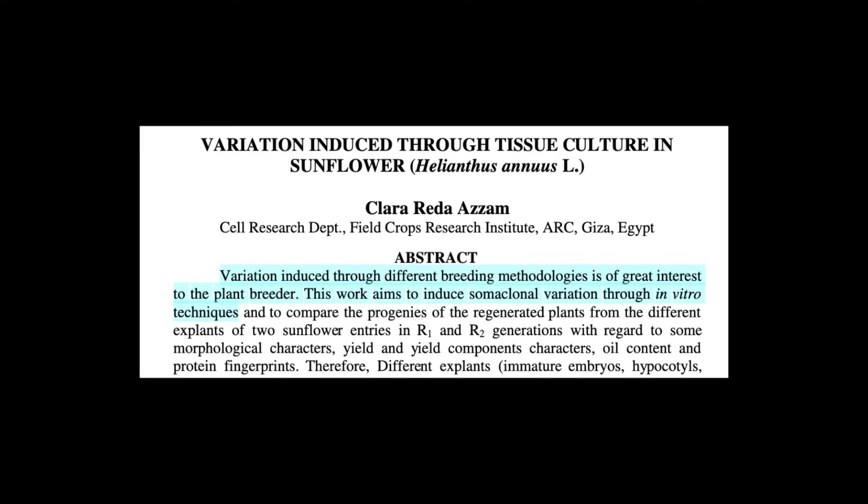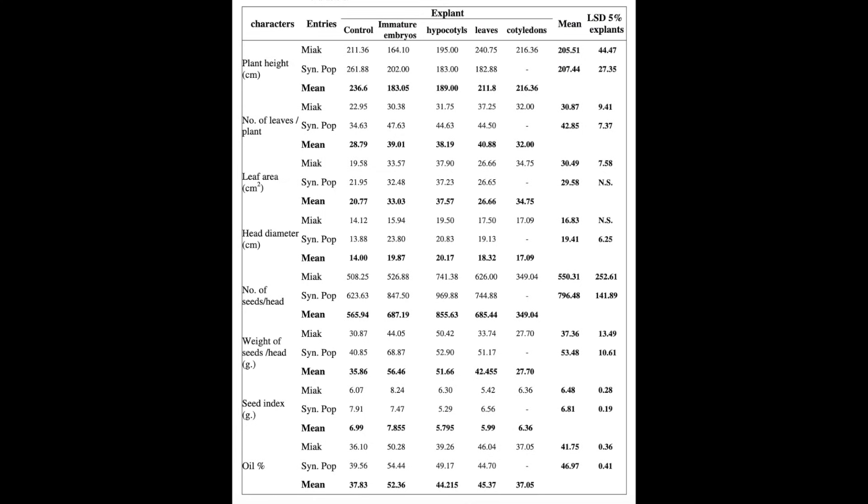In this particular study that I found, scientists were actually trying to induce somaclonal variation or mutations in sunflowers through tissue culture. I'm not trying to mutate my sunflowers, I'm simply trying to clone them. But since the protocol they developed worked to clone sunflowers in vitro, and the scientists were able to use leaves as their explants or tissue samples, I'll be following this specific protocol.